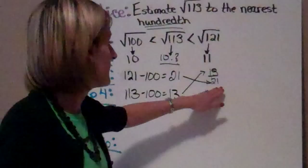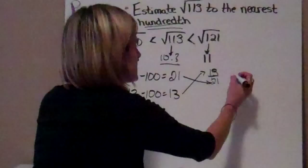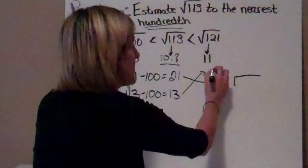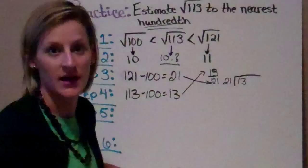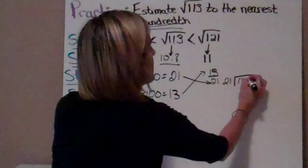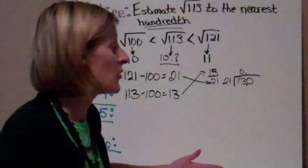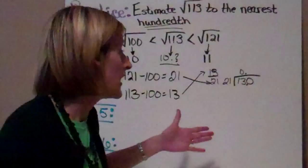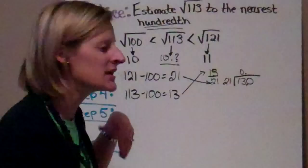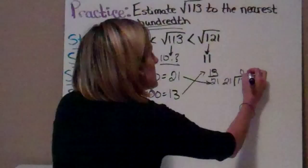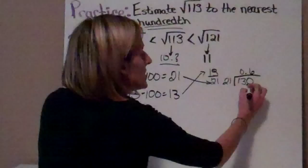Now I've got to divide. Top dog gets the house — my 13 gets the house, 21 goes on the outside. Does 21 go into 13? No. So I add a zero and a decimal. Does 21 go into 130? Yes. 20 goes into 100 five times, so probably 21 goes into 130 six times. 6 times 21 is 126. I subtract and get 4 left. Add another zero, bring it down — I have 40. 21 into 40 only goes one time. Subtract 21, carry — I've got 19.